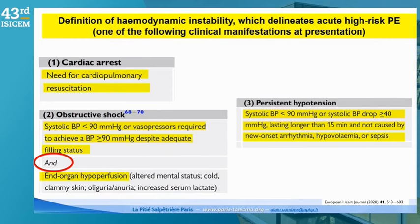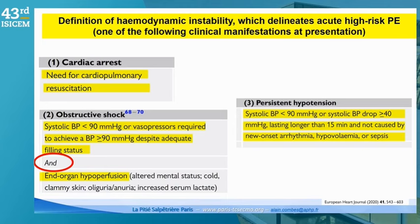What is the definition of hemodynamic instability, which classifies a patient as high risk from the beginning? There are three criteria, and one of these is enough to classify the patient as high risk. The first is cardiac arrest. The second is systolic blood pressure which remains below 90, the classical threshold for shock, or the need for vasopressors to maintain this systolic blood pressure. Because of shock, the patient will have signs of end-organ hypoperfusion.